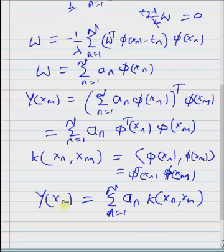Hence the final prediction function is always a function of the kernel function, which is just a dot product of the non-linear transformation functions of the feature vector. Thanks for watching.